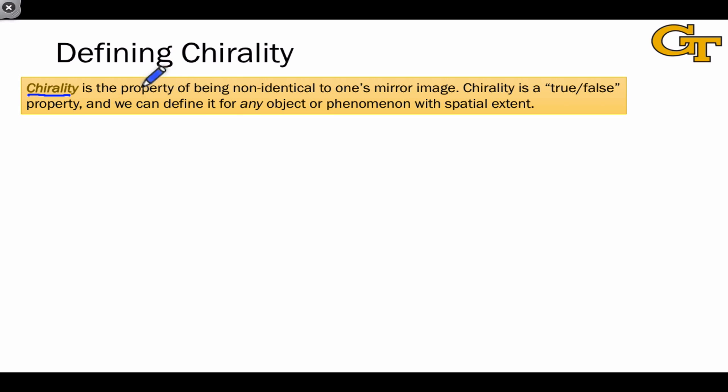Chirality is formally defined as the property of being non-identical to one's mirror image. Essentially, it answers the question, is an object the same as its mirror image or not? This is a yes-no question, and so chirality is a true-false property in the sense that an object either is chiral or is not. And we can define whether an object is chiral or not for any object with spatial extent.